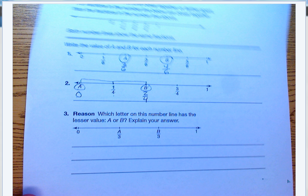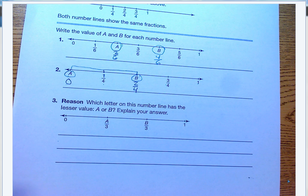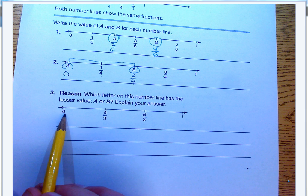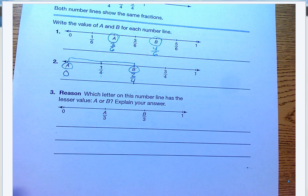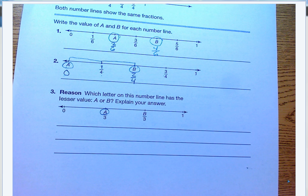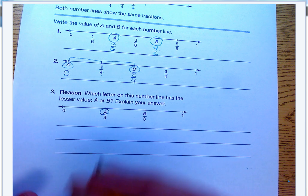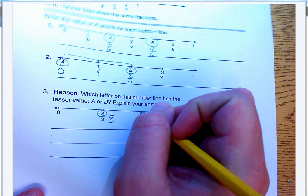All righty, we're going to move on down. Reason, which letter on this number line has the lesser value, A or B? And we can actually connect this to our timeline activity yesterday, too. So think about that. Which one has a lesser value? Is it this A over three or B over three? So is it how many thirds or how many thirds? What do you think? Brennan, what do you think? Which one would have a greater value? Well, let's answer this question first. What is A worth? What is A worth? What number is missing there? One. One, yeah, that's right. So A is one-third.